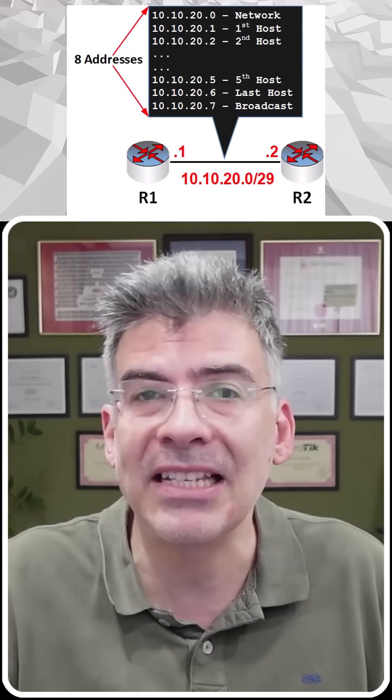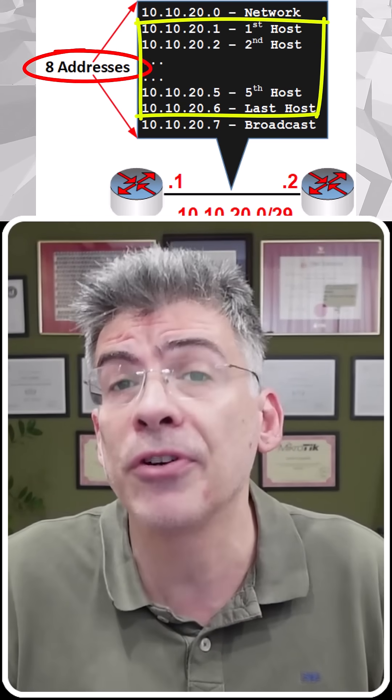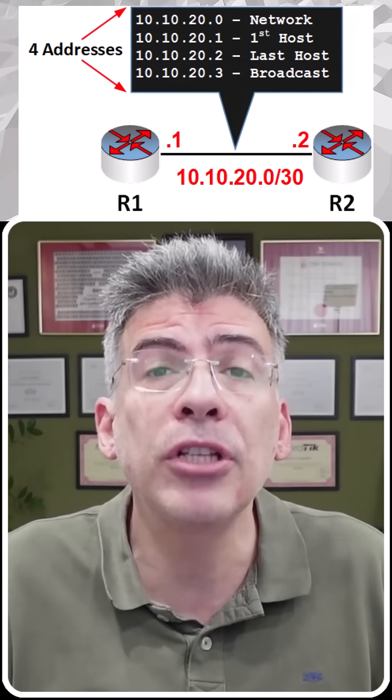For smaller subnet sizes like /29, we have a total of eight addresses available with six usable addresses, since the first and last are unusable. As we have already seen, for /30 subnets we have a total of four addresses, two of which are usable host addresses.